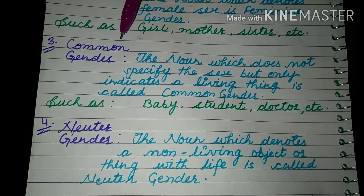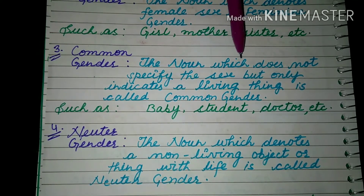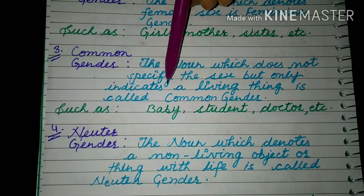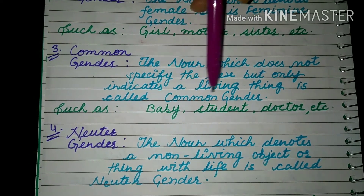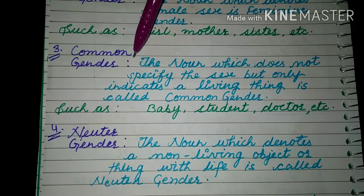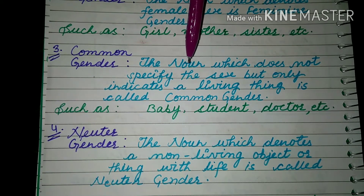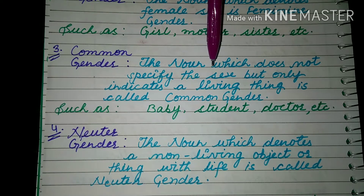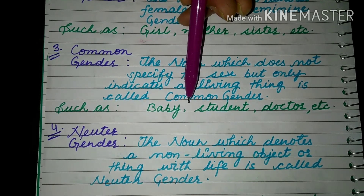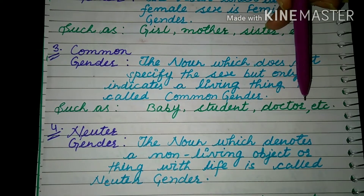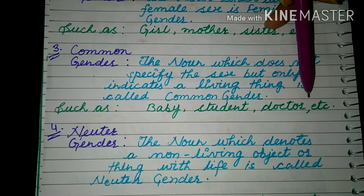The third kind of gender is common gender. Common gender means the noun which does not specify the sex but only indicates a living thing — both male and female are common in it, not specifying a particular sex. For example: 'baby' — it can be a girl baby or a boy baby. Similarly 'student' can be a girl or boy, and 'doctor' can be a lady doctor or a male doctor.